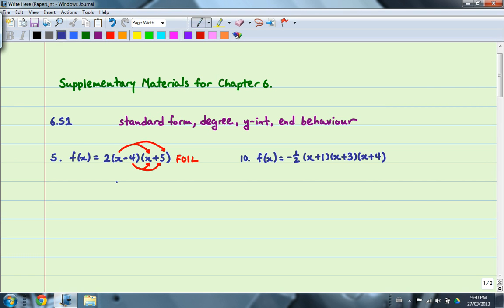So if I were to do that, I still have the 2, that doesn't change at all. But you will note that the first terms multiplied together will give you x squared. The outside terms will give you 5x. The inside terms will give you negative 4x. And finally, the last terms will give you negative 20.